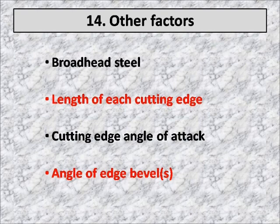The angle of attack is a really important one, and it's hard to get people to understand. The best way to think of it is: if you put a steak on your plate and take a really sharp steak knife and start trying to cut it straight down, it's pretty hard to cut that steak. Even at a 45-degree angle it takes a lot of effort. But if you lower the angle of attack, that steak cuts just like a piece of butter. The lower you can get that angle of attack, the better it cuts through the tissues.